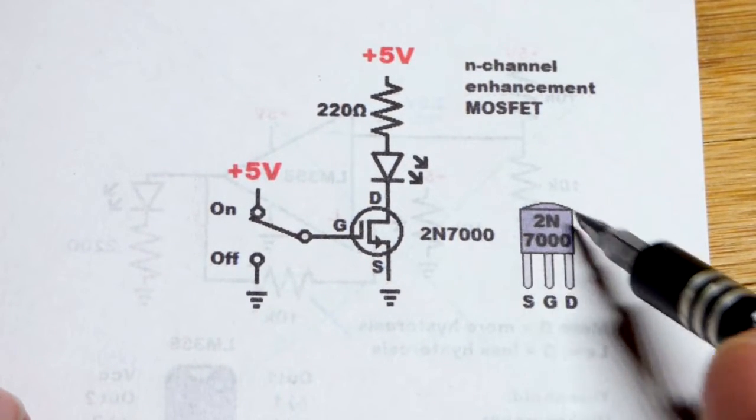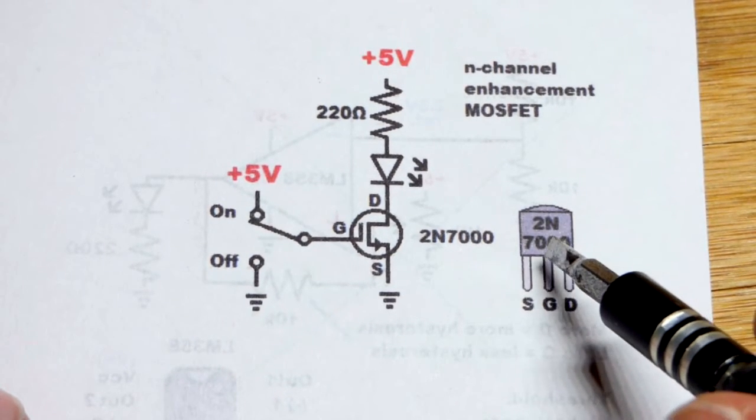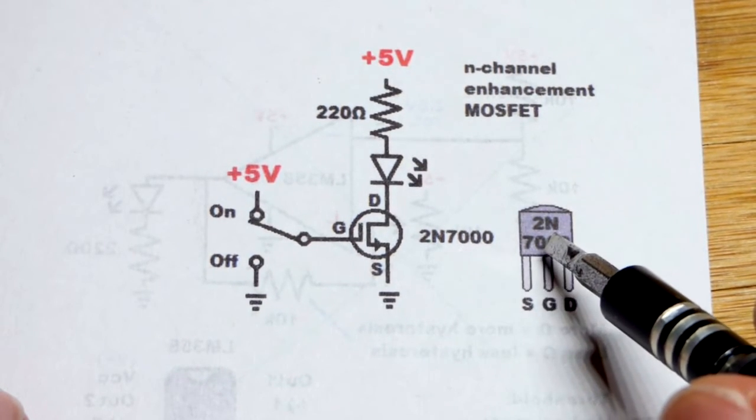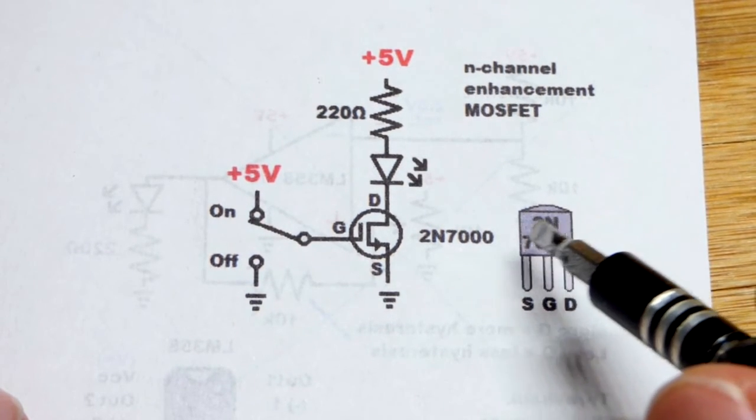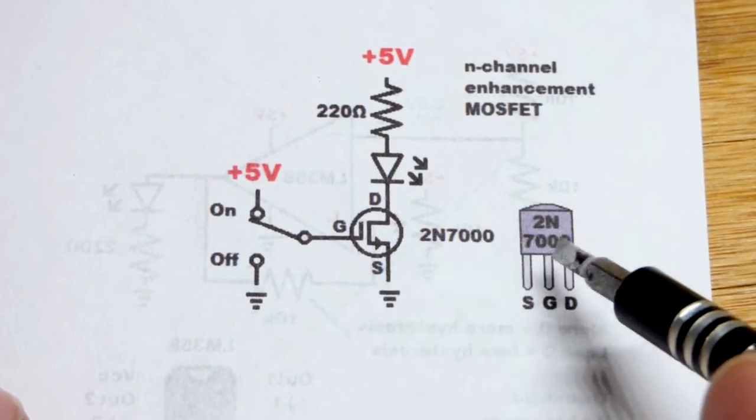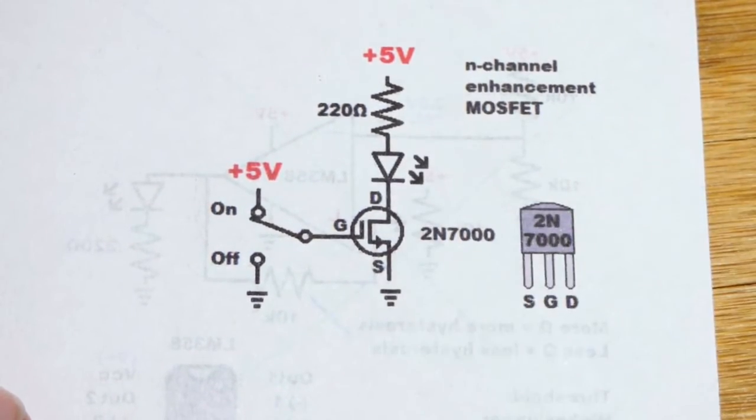We have the pin layout for the TO92 package version of this component. And so left pin is the source. Middle pin is the gate. And the right pin is the drain. If you turn the flat side to the right, then the source goes down to the bottom, gate to the middle, and then the drain to the top, as we saw on the breadboard.